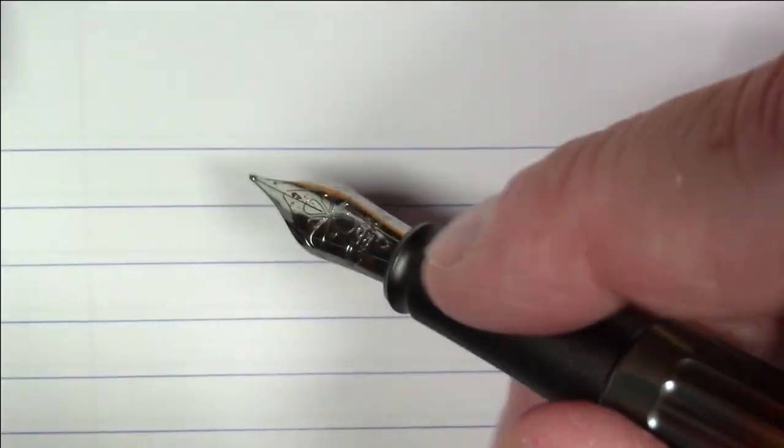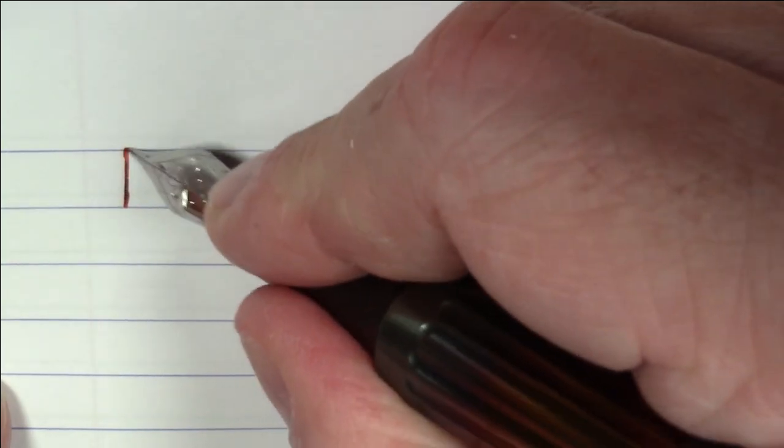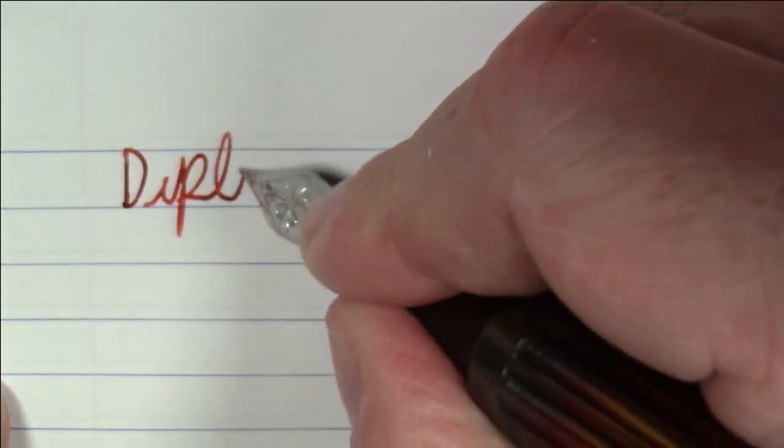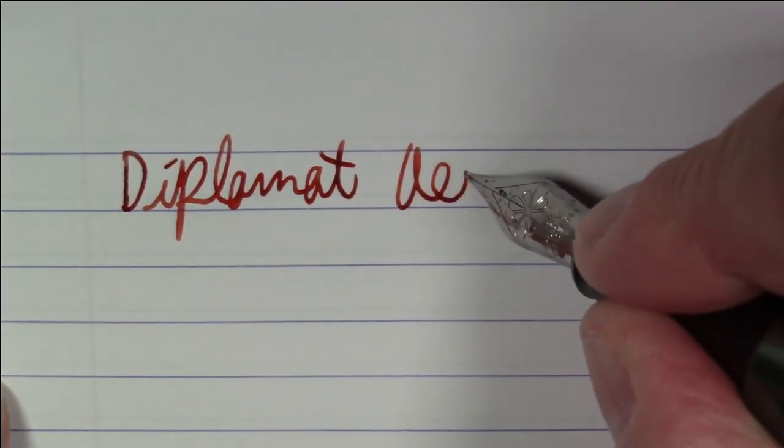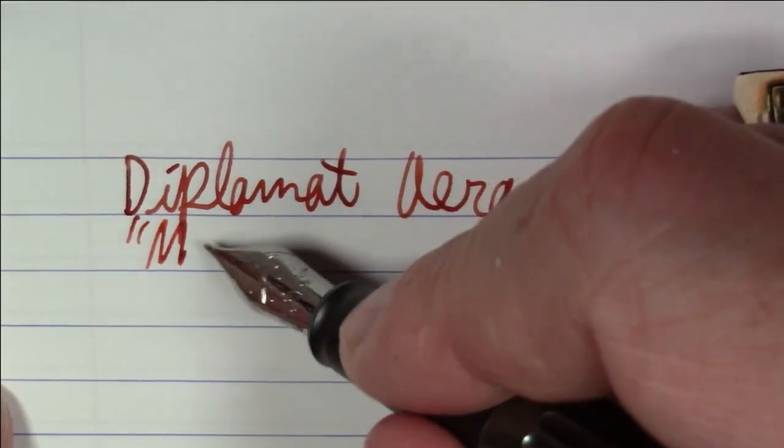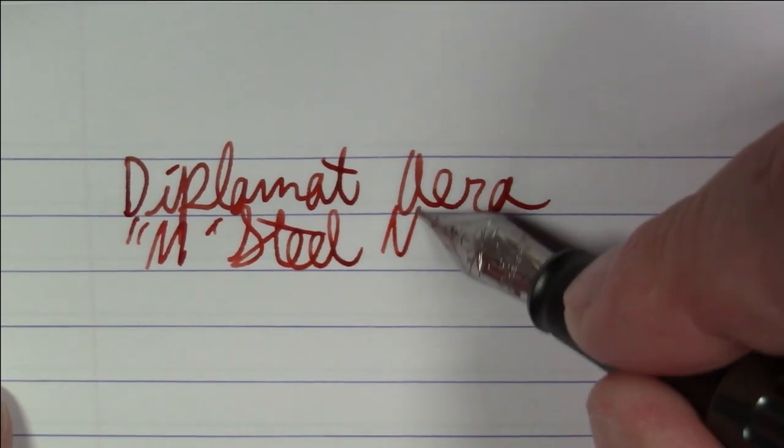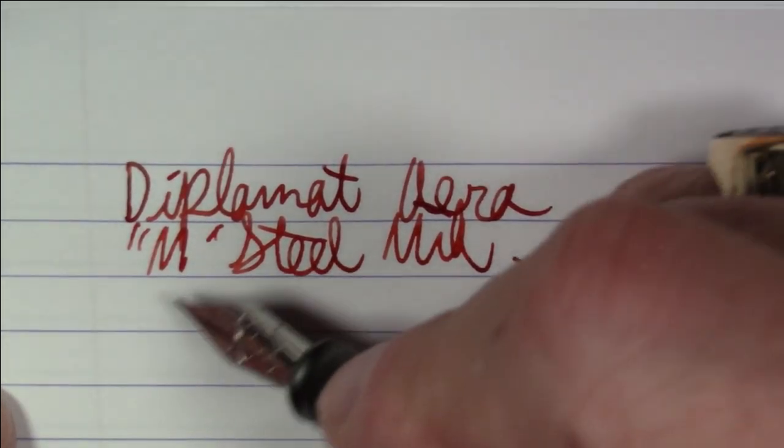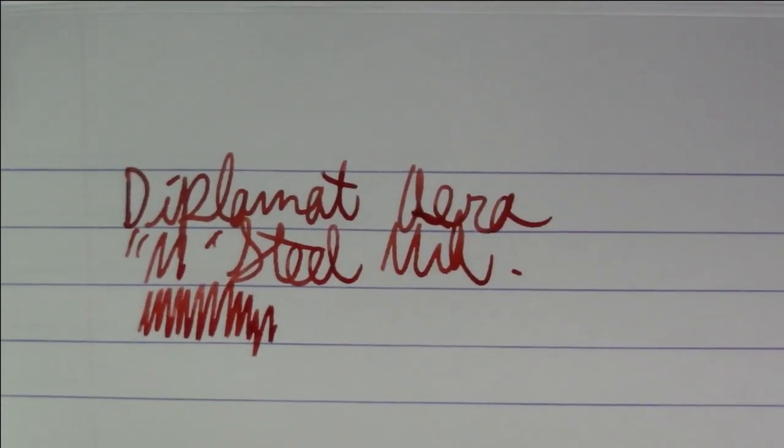Let's talk a little bit about how this pen writes. Okay folks, so this pen is a Diplomat Aero and this has a medium steel nib.